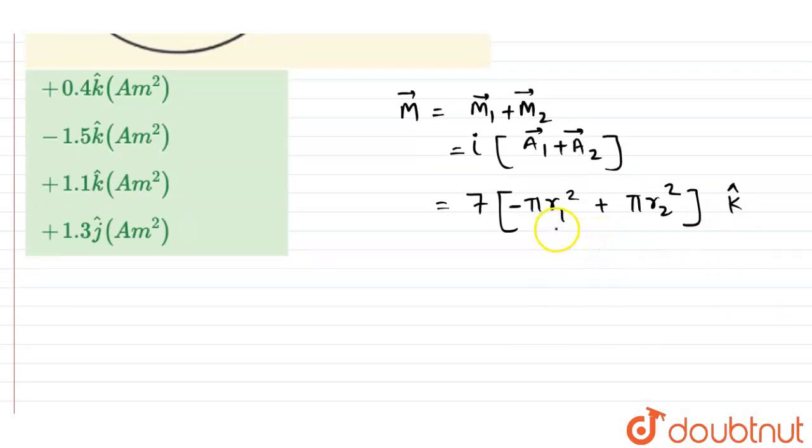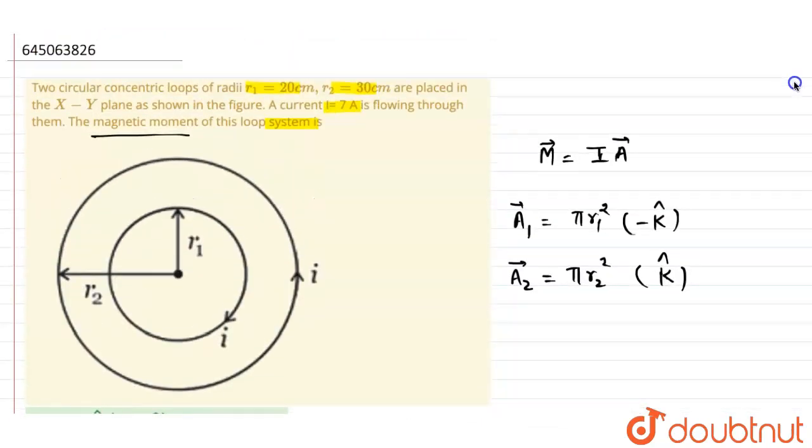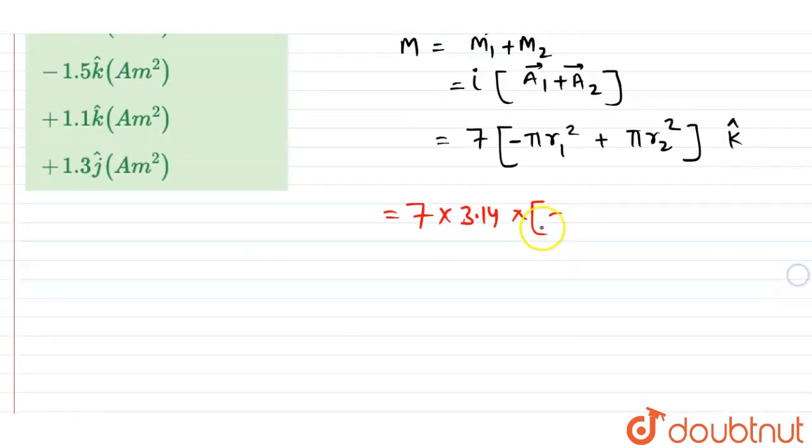We will take them all in the k-hat direction, that's why here minus π r1 squared. Now try to solve this. Here π can be common, so we can write 7 multiplied by π, π is 3.14, and multiply with minus r1 squared. r1 is 20 centimeters and r2 is 30 centimeters.